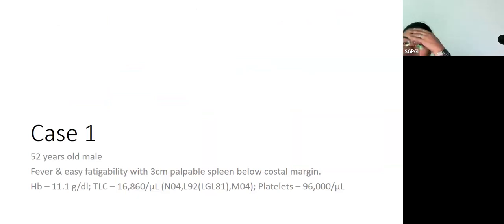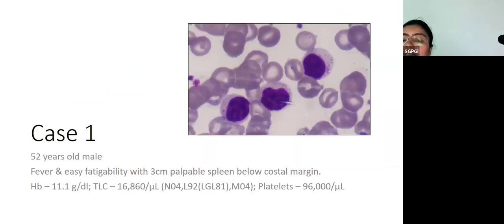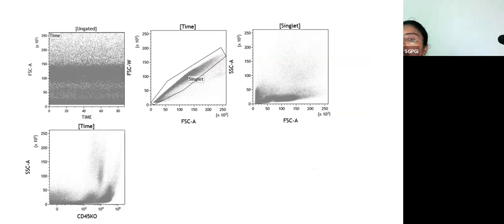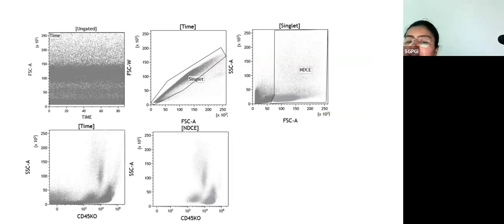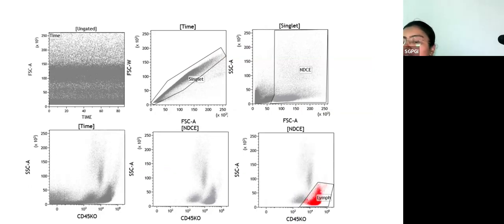You have a 52-year-old male who was referred to us with 3 cm palpable splenomegaly and history of fever. If you look at the counts, borderline low platelet count, and the TLC is elevated 16,860 with 81% of these cells. What is the proliferation very likely? Large granular lymphocytosis. If you look at the percentage of total lymphocytes and the percentage of LGLs, you have a very high amount of large granular lymphocytes.